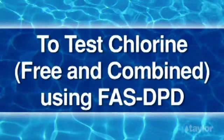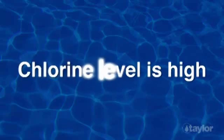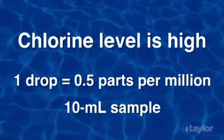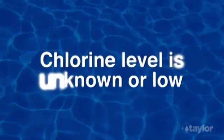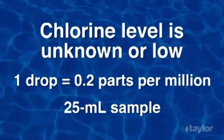To test free and combined chlorine using FAS-DPD, first decide which drop equivalents to use. If you suspect the chlorine level is high — perhaps because the water has been shocked recently — use one drop equal to 0.5 parts per million and a 10 mL sample. This will save time in titrating reagent. If you do not know the chlorine level or you suspect it is low, use one drop equal to 0.2 parts per million and a 25 mL sample.